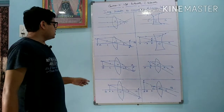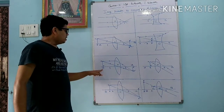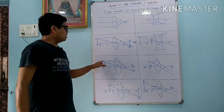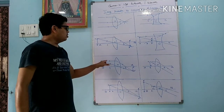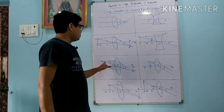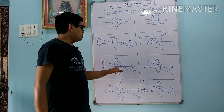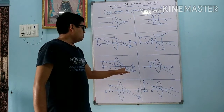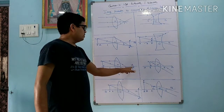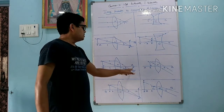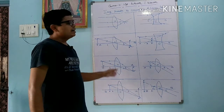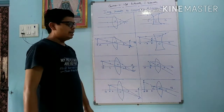Third condition: when we put the object at 2f1, two rays are passed. One ray is passed parallel to the principal axis; after refraction, the ray passes from f2. The second ray passes from the optical center and it goes directly and meets at 2f2. We get a real and inverted image and the size of the image is same as the object, obtained on the other side of the lens.